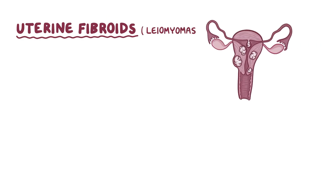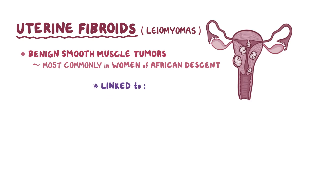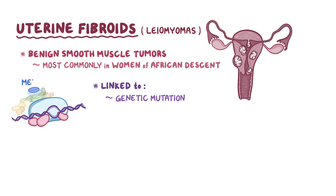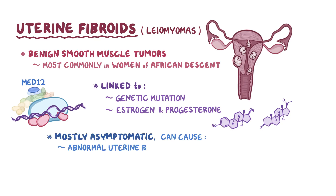As a quick recap: uterine fibroids, or leiomyomas, are benign smooth muscle tumors of the uterus, and occur most commonly in women of African descent. They're sometimes linked to genetic mutations in smooth muscle cells, like in the MED12 gene, but estrogen and progesterone can also play a role in their development. Most fibroids are asymptomatic, but some cause abnormal uterine bleeding, pain, and fertility issues.